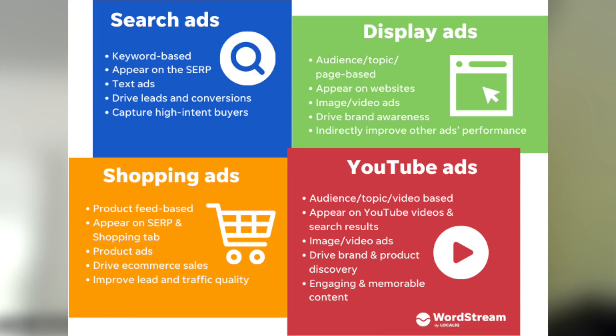There are different ad types and different campaign types. Most common is search — you go to Google, type in a search, and you see your search ad. You'll also see shopping ads within the search results; shopping campaigns are typically for e-commerce websites selling a product. You also have display campaigns, which are your images — let's say you're browsing CNN.com and you see that big banner ad across the top. That is a display ad.